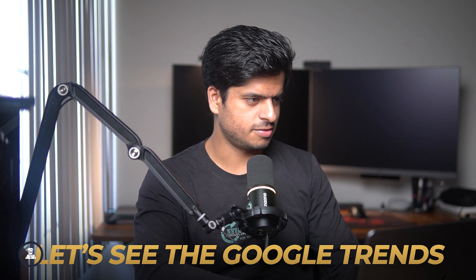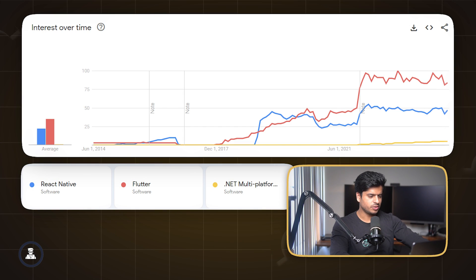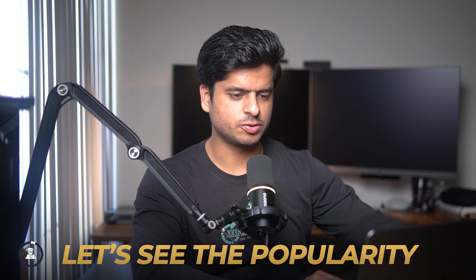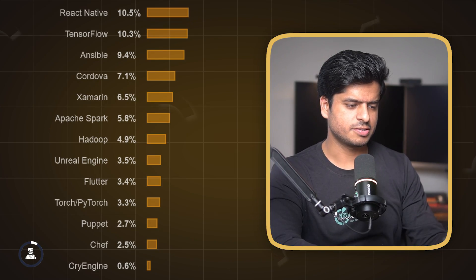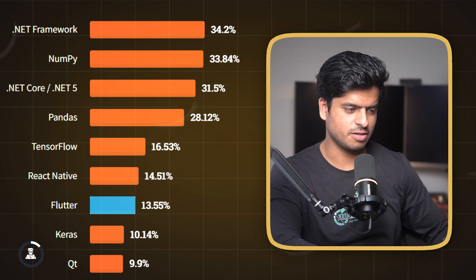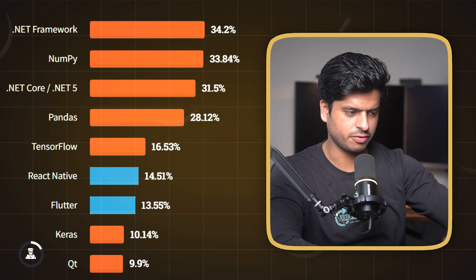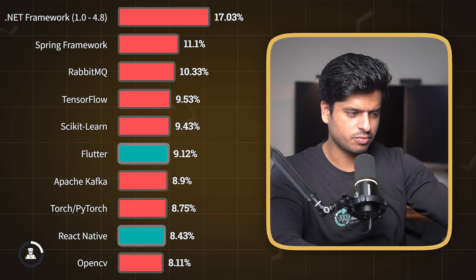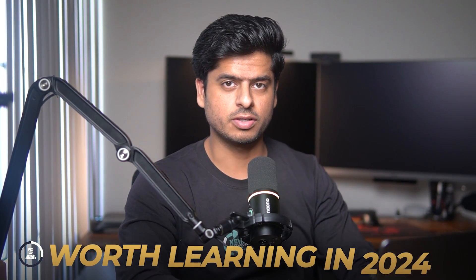Let's look at popularity and the developer ecosystem, starting with Google Trends. The only reliable comparison was between React Native, Flutter, and .NET Multi-platform. It was actually in 2020 when the tables turned and Flutter started getting more hits than React Native, and that trend is continuing. Looking at the Stack Overflow developer survey for popularity: in an early year Flutter was at 3.4% and React Native at 10.5%. Then Flutter caught up to 13.55% while React Native reached 14.51%. And in 2023, Flutter actually surpassed React Native — Flutter at 9.12% versus React Native at 8.43%. The trend clearly shows it's worth learning in 2024.